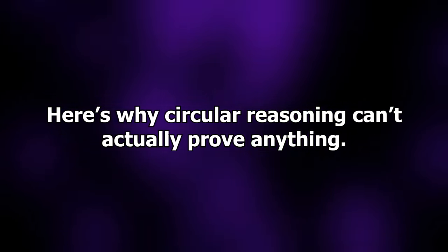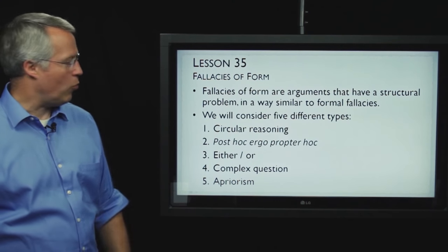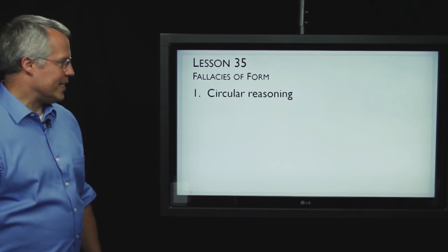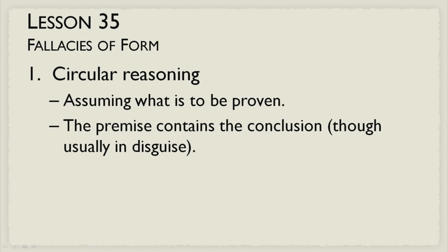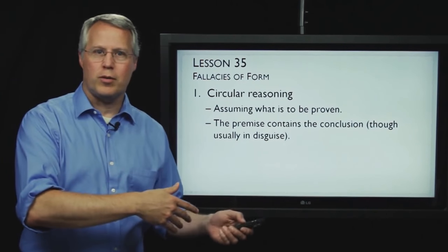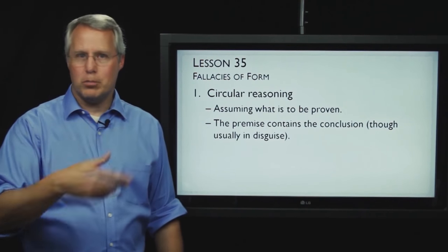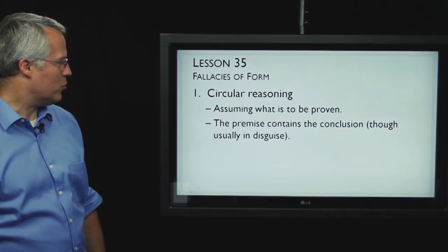Here's why circular reasoning can't actually prove anything. Circular reasoning is when you assume what you're trying to prove. It usually happens where the premise contains the conclusion, though in some disguised way. Or the premise goes to the conclusion which goes to the premise which goes to the conclusion, and it keeps going back and forth and round and round.